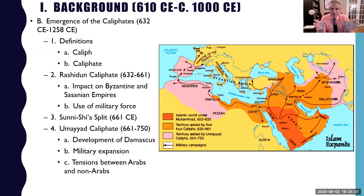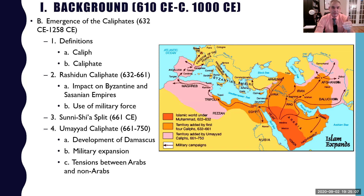When Muhammad dies, the last and greatest prophet is dead — there will be no more prophets after him — yet Islam needs a leader. This brings us to the creation of the caliphates, from 632 CE to 1258 CE. The caliph is the successor to Muhammad, the individual who takes on the religious and political leadership of the Islamic State. A caliphate is simply the kingdom or territory ruled by a caliph.